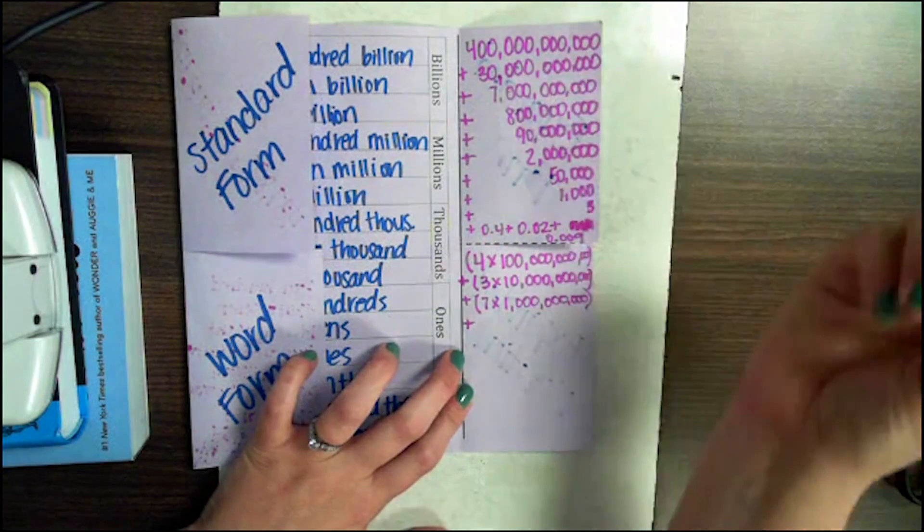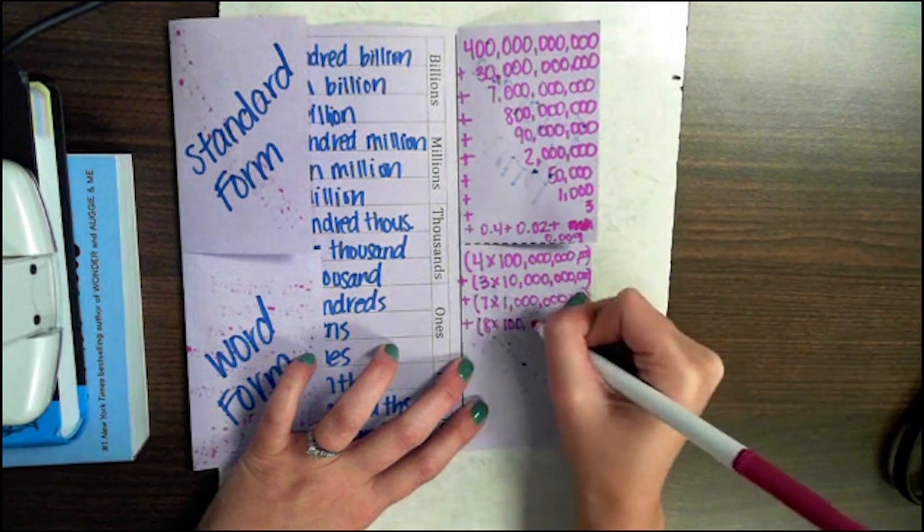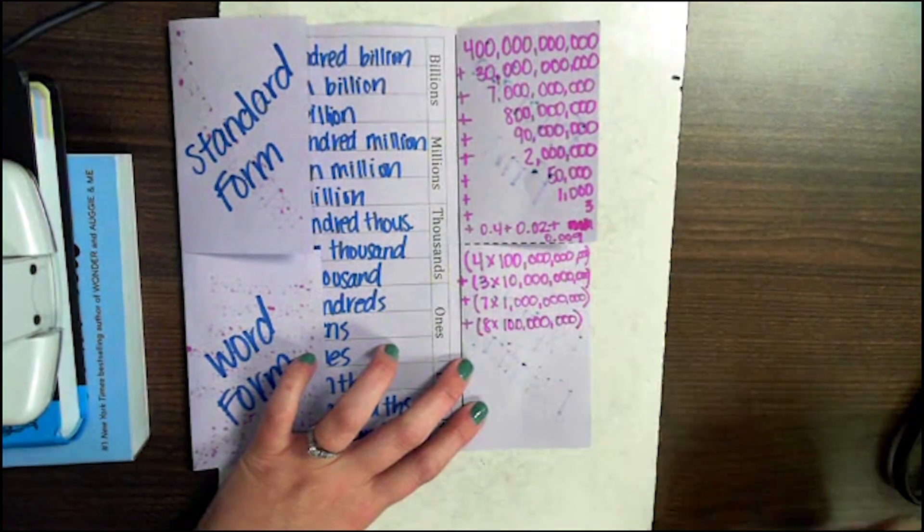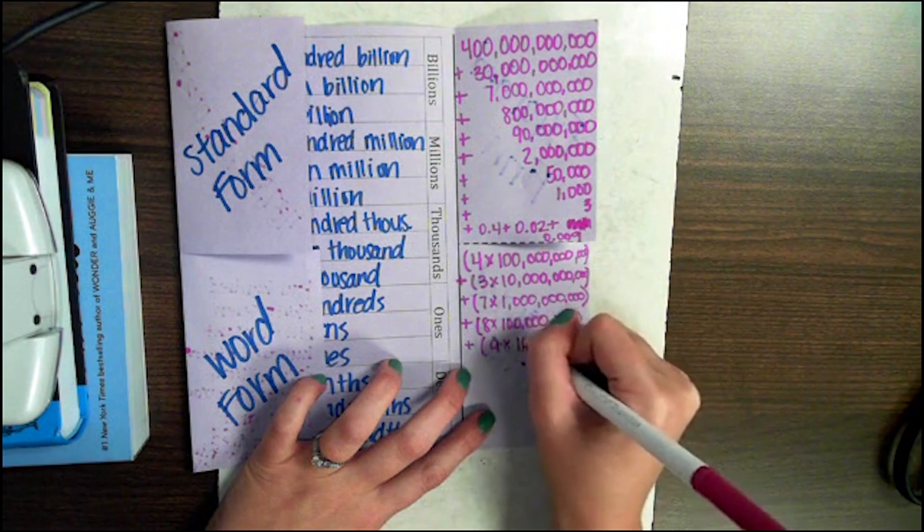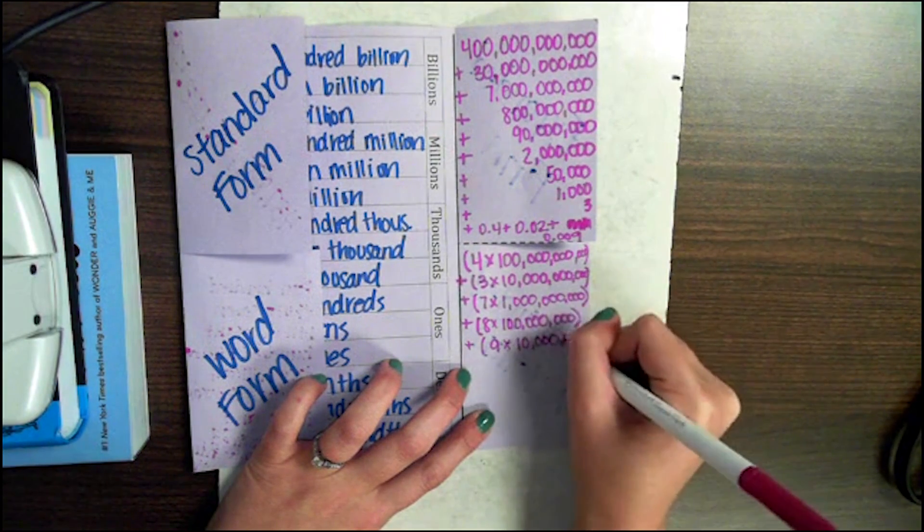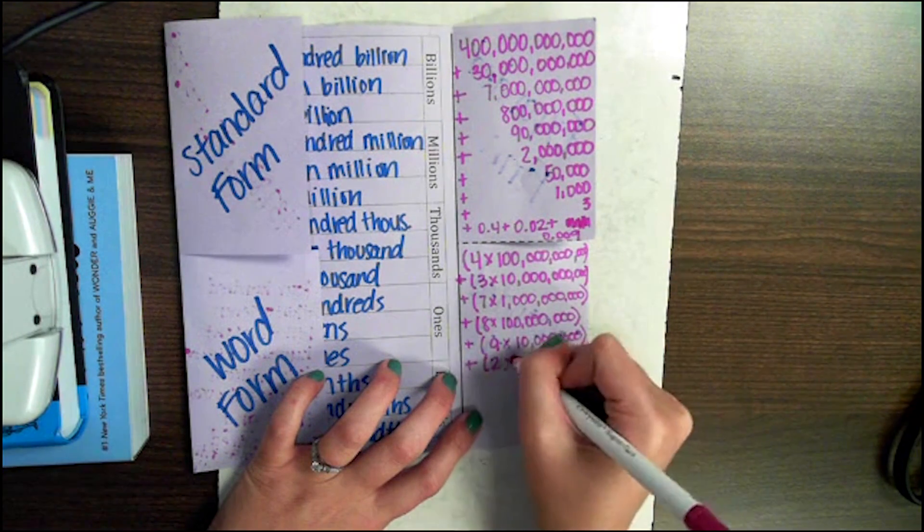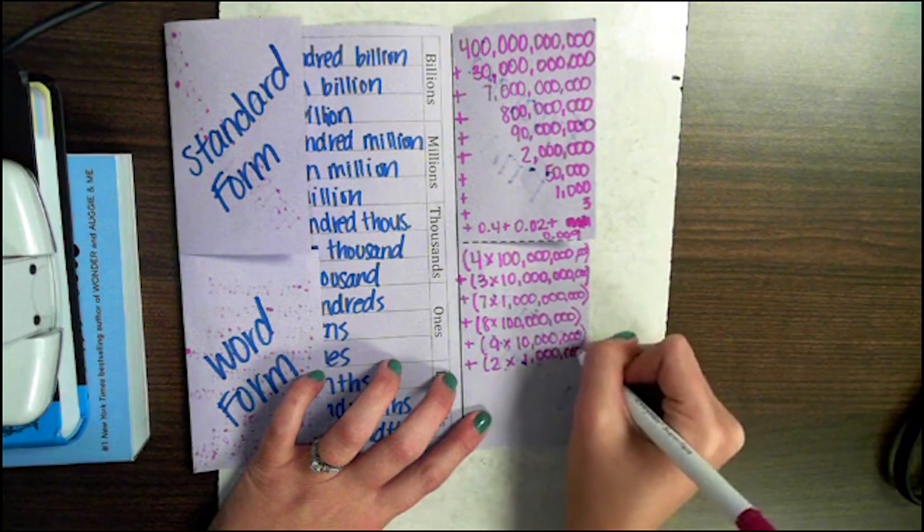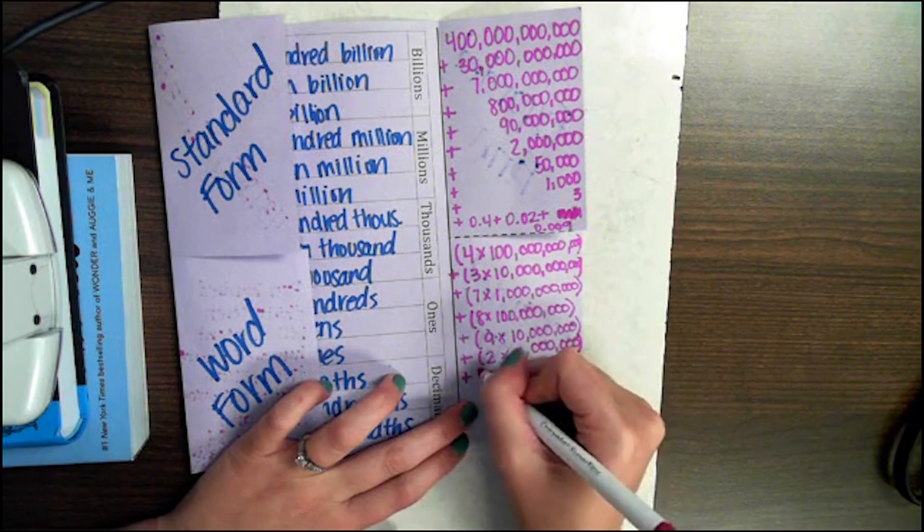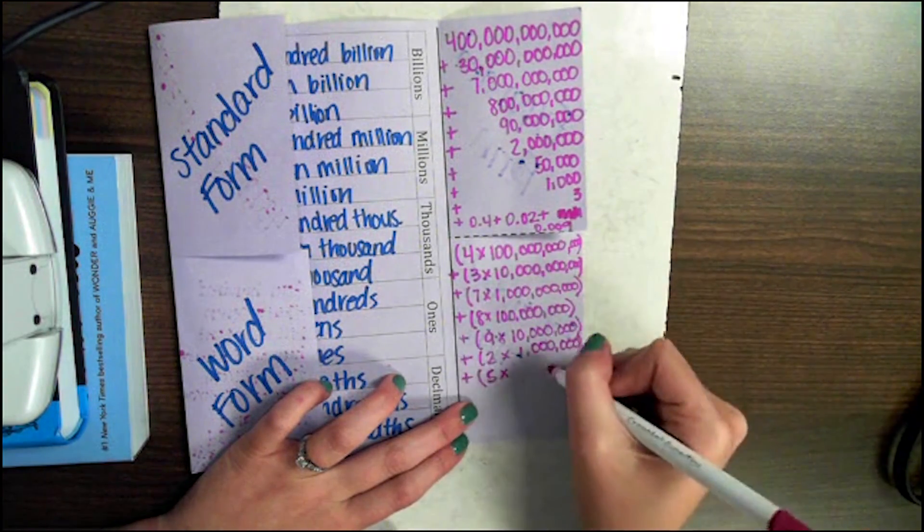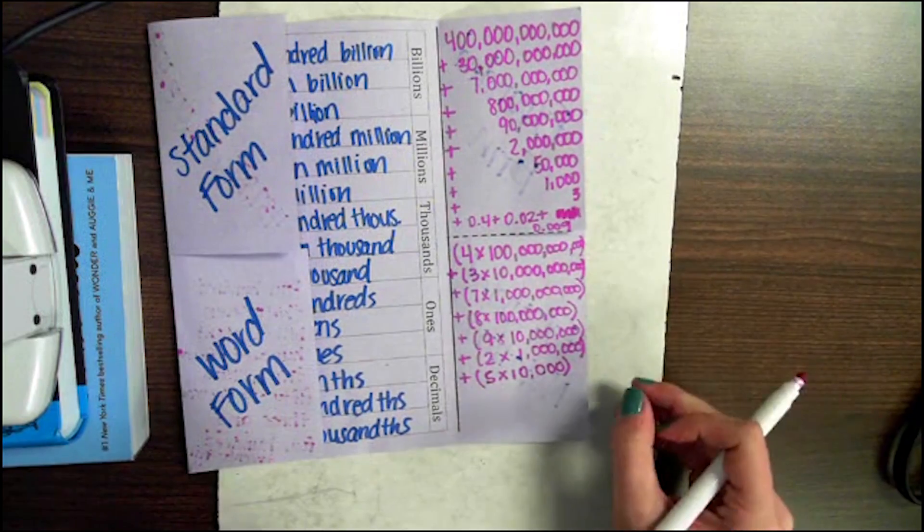Our next number is in the hundred millions, so this is going to be 8 times 100 million. Next is going to be 9 times 10 million. 2 times 1 million. 5 times 10 thousand, since our 5 is in the ten thousands place value.